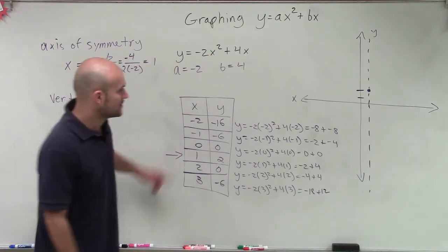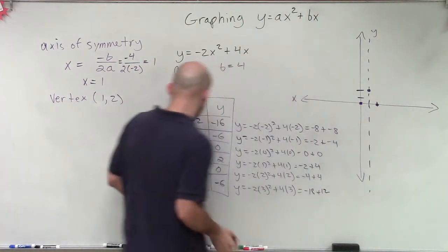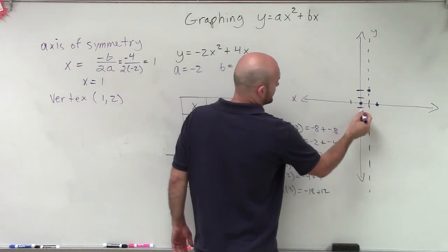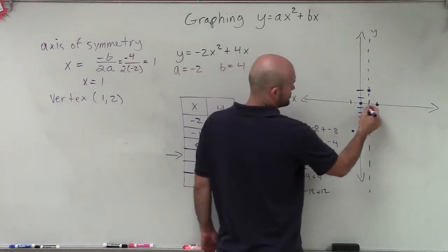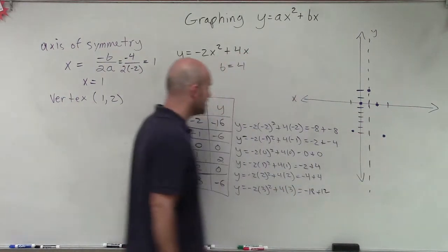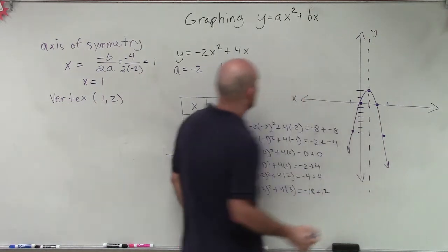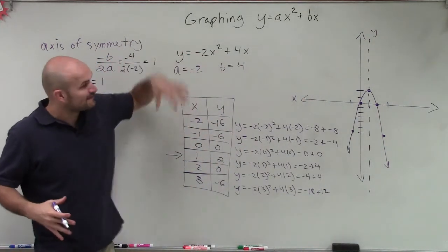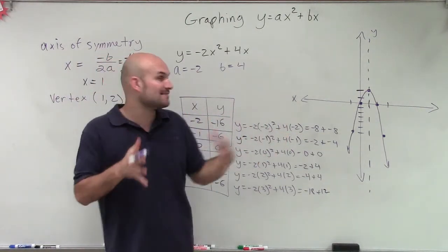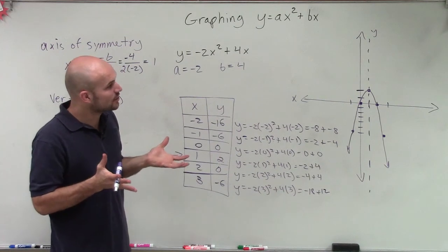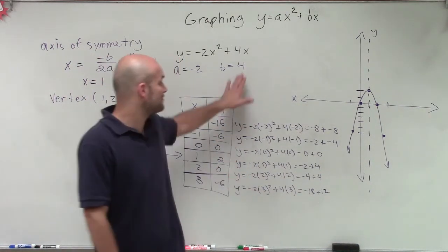Now let's plot the rest of the points. At 0, y equals 0. At 2, y equals 0. At negative 1, y equals negative 6. At 3, y equals negative 6. Since our a is negative, we can see the graph is going downwards. The b term has helped shift the graph left and right, and the graph has also been shifted in an upward direction. The vertex at (1, 2) is the maximum point of the parabola.